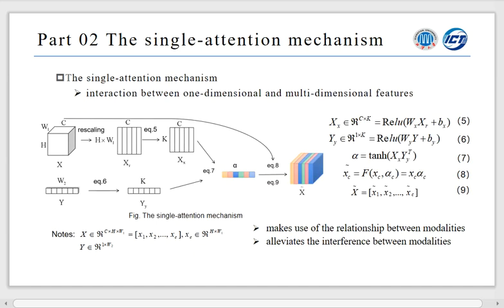The single attention is achieved by equation 5 to equation 9. The original multidimensional feature is coded X and the one-dimensional feature is coded Y. We rescale the X and get the temporary feature XR and adjust the dimensions of XR and Y by using equation 5 and equation 6.